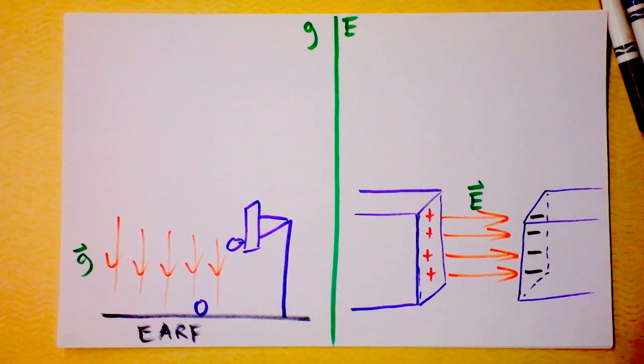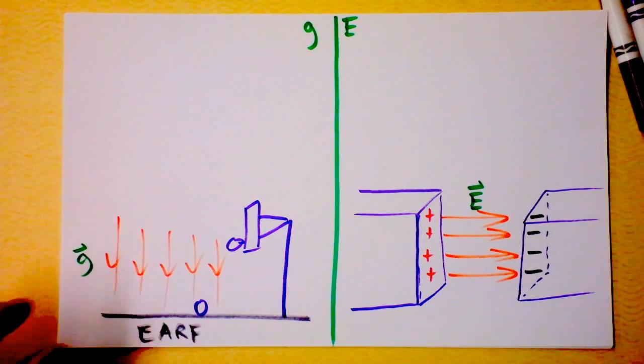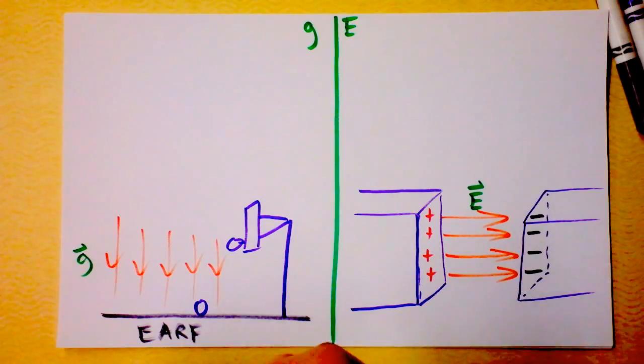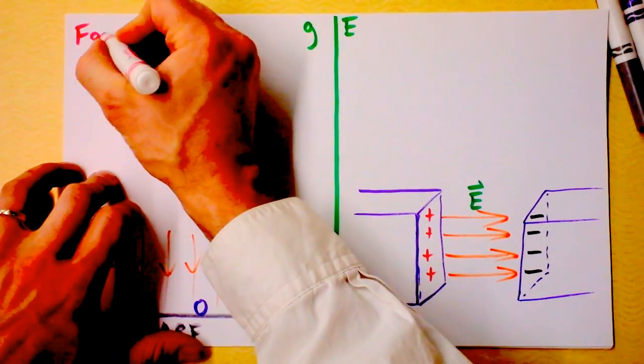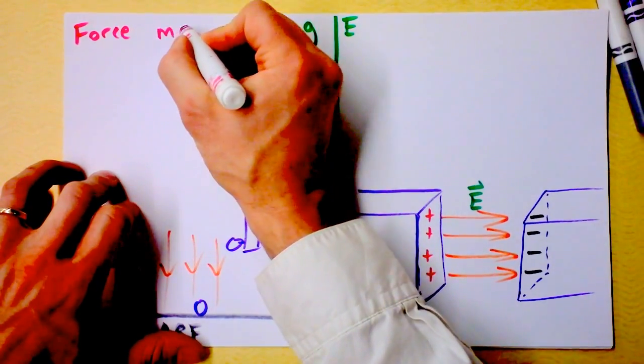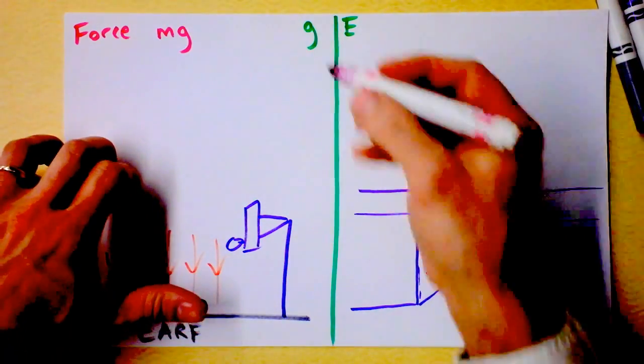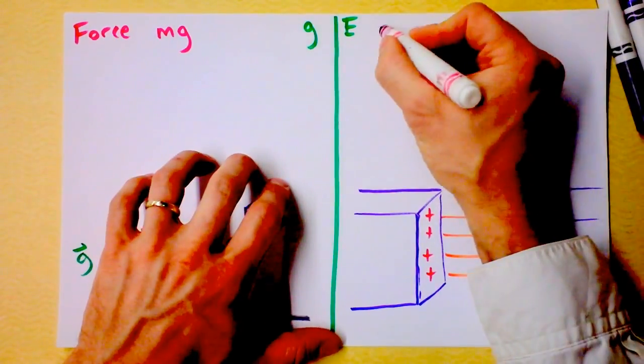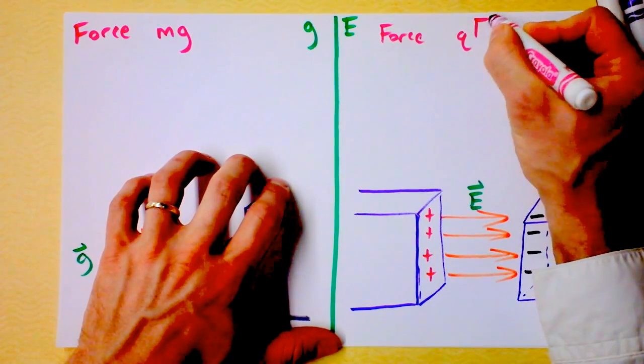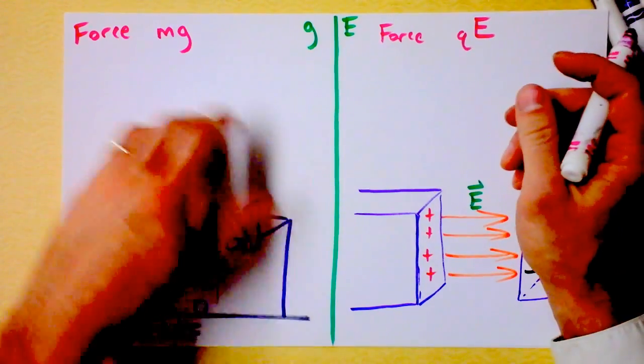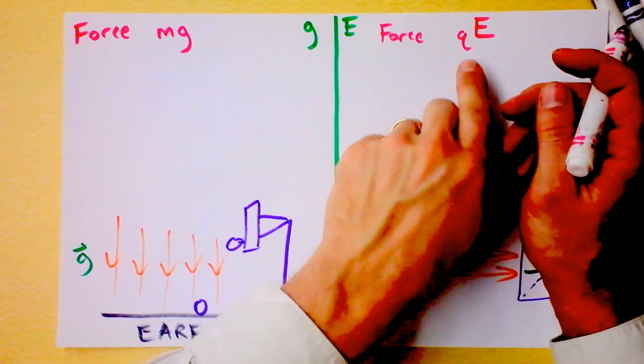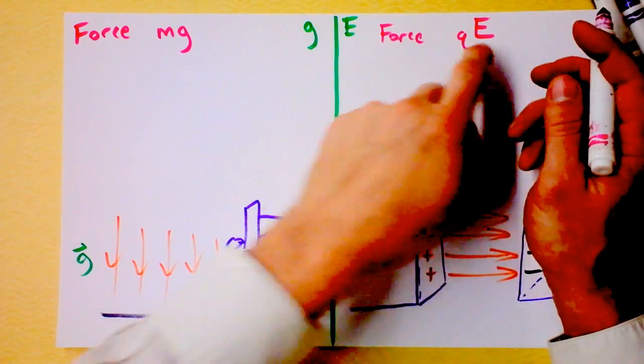We've got an electric field right here, and we've got a gravitational field right there. I'm using a lowercase g for a particular reason. So I promised that we'd start with force. Force in a gravitational field is m times g, and force in an electric field is q times E. So this is how much mass you've got, and this is how big the field is. This is how much charge you've got, and that's how big the field is.